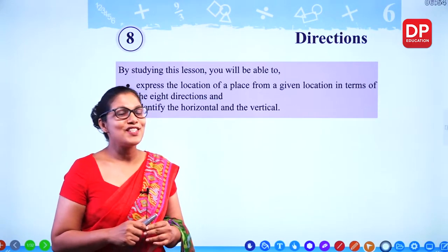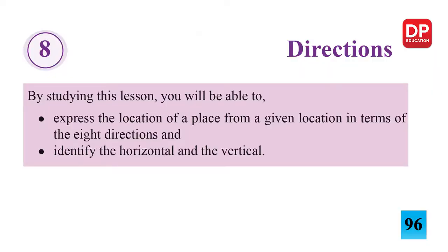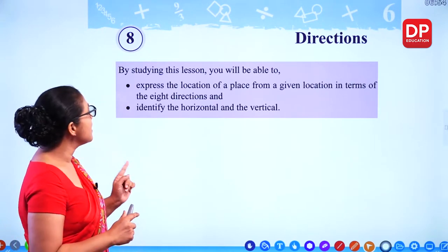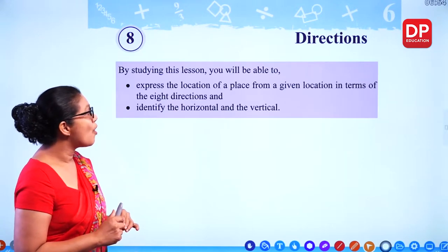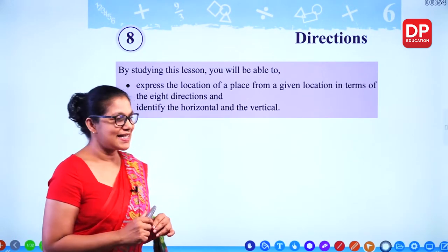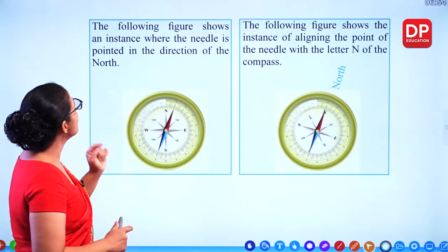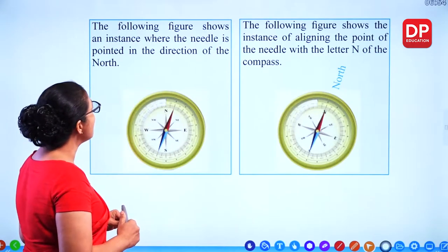Hello children, today I'm here to teach you chapter 8 in your textbook called Directions. In this lesson we are planning to learn the location of a place from a given location in terms of the 8 directions, and identify the horizontal and vertical planes. This is called the compass. The following figure shows an instance where the needle is pointed in the direction of the north.